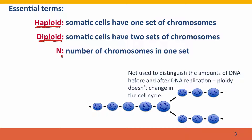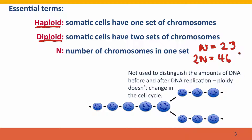N is the number of chromosomes in one set. For us, N equals 23. And because we're diploid, we say 2N equals 46 — 46 total autosomes, and then either two X chromosomes if we're female, or an X chromosome and a Y chromosome if we're male.